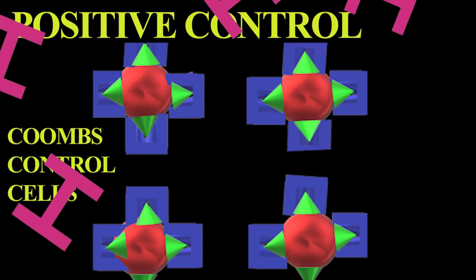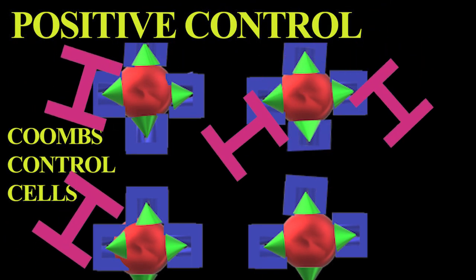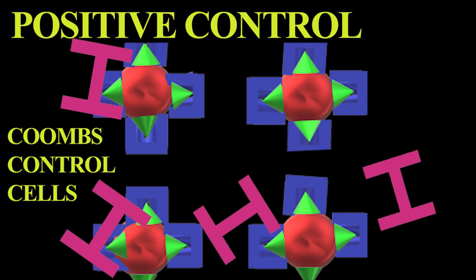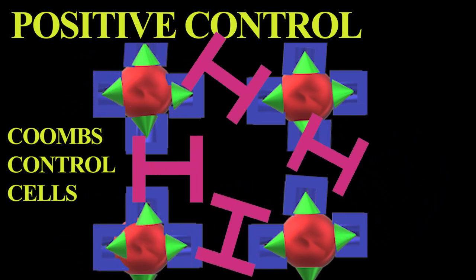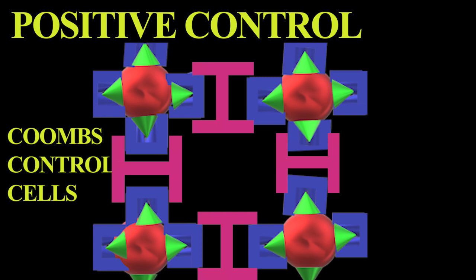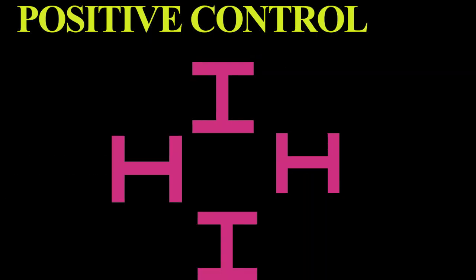How to test that the anti-human globulin is working. The control has to be done every day. It should be tested with IgG coated RBCs and if possible complement coated and non-coated RBCs respectively. Positive control: